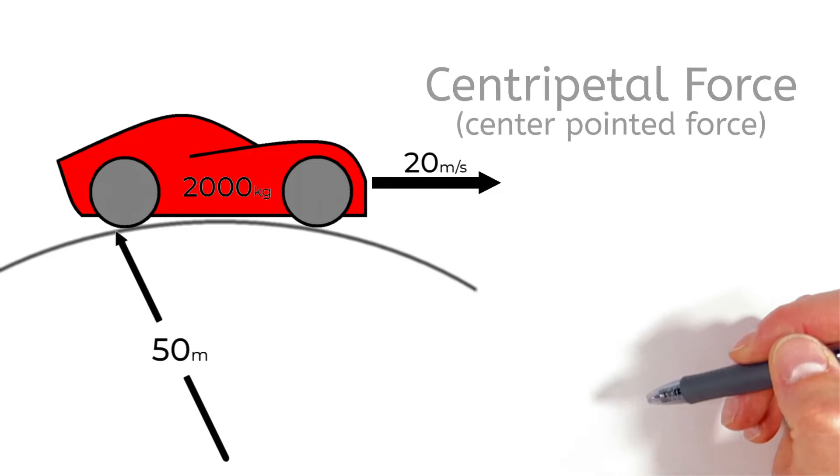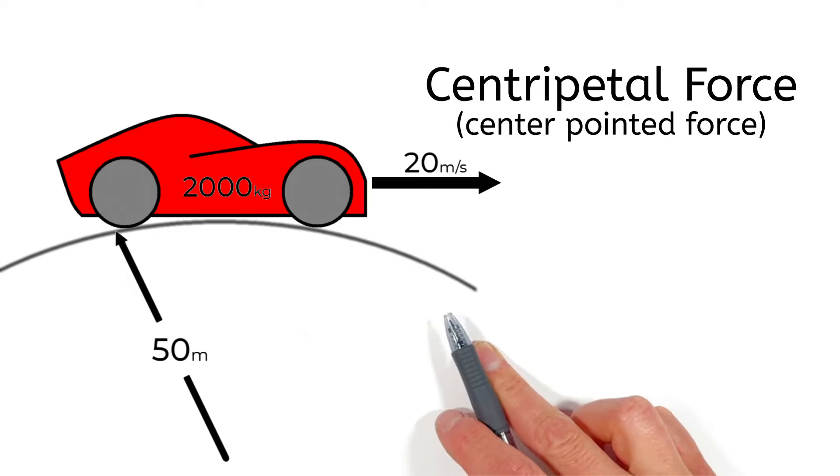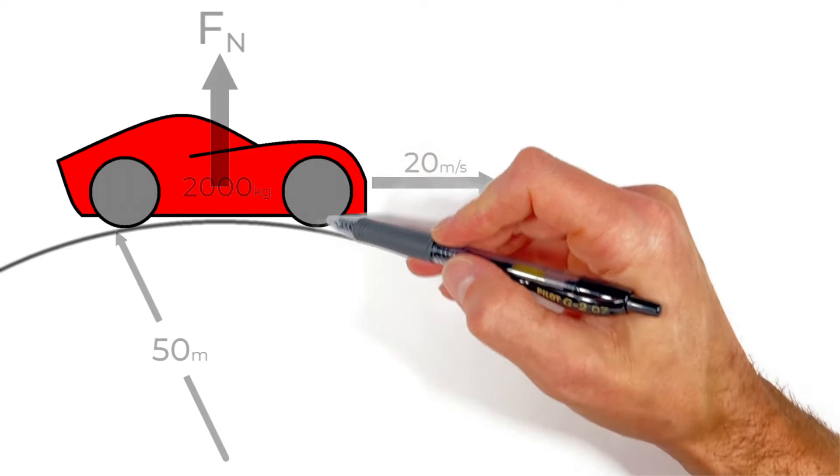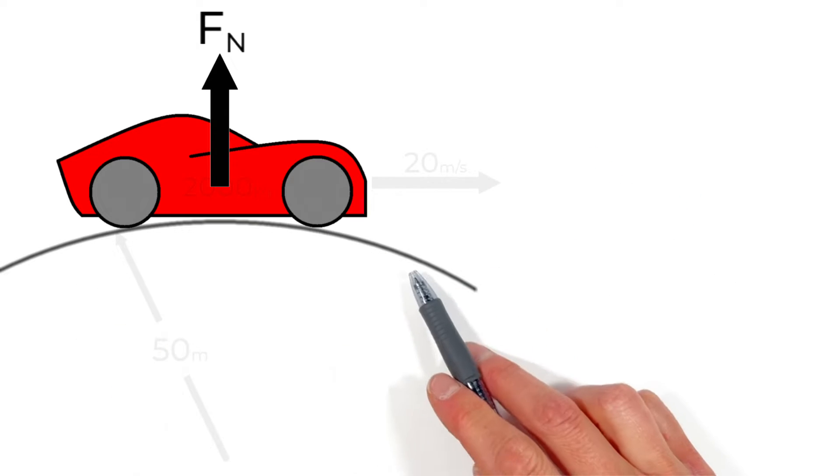Today we're applying the concept of centripetal forces to the situation where we have a car traveling up over the top of a crested hill. In this problem we're going to solve for the magnitude of the normal force between the car tires and the road just as the car goes over the top of the hill.